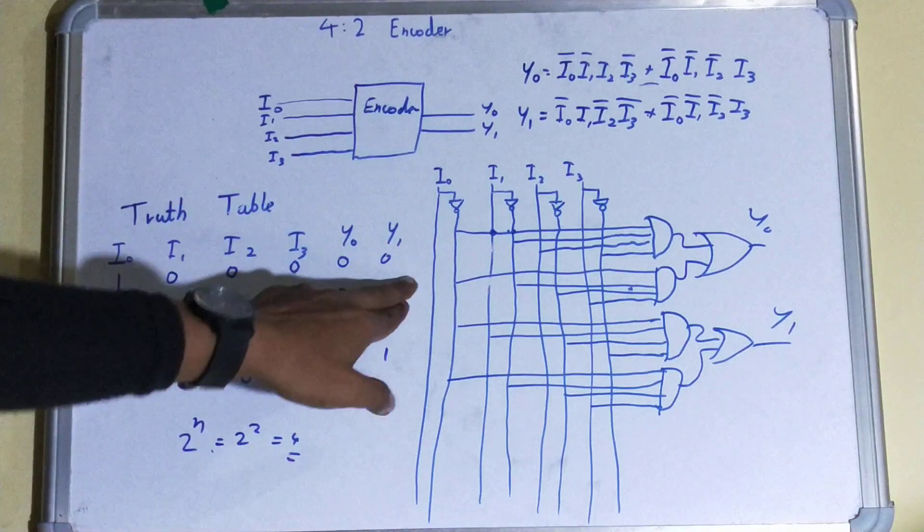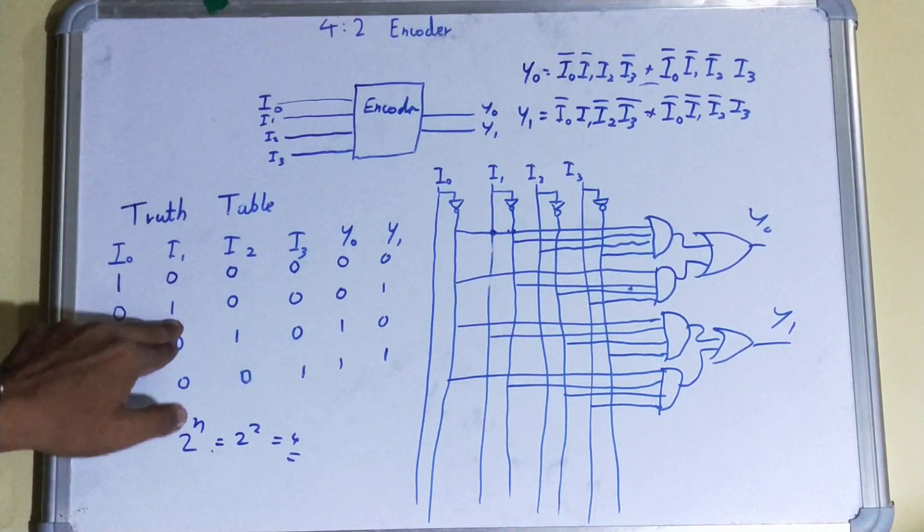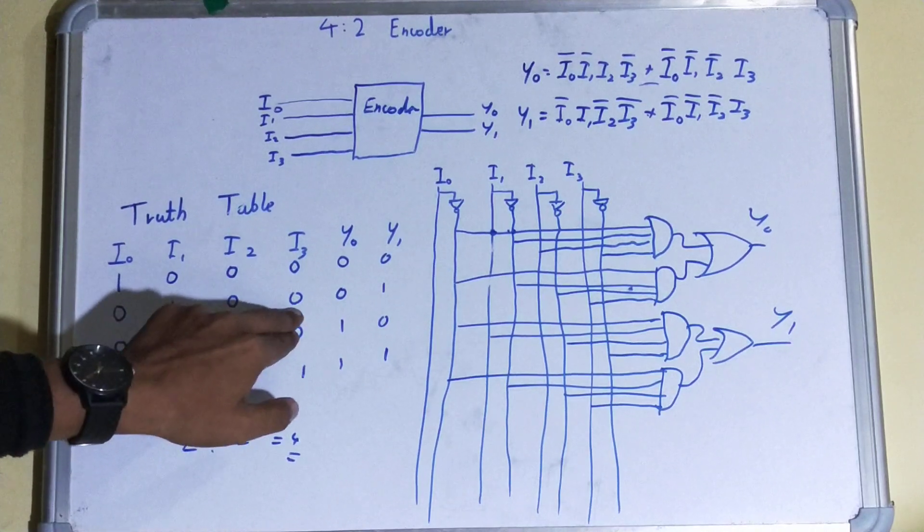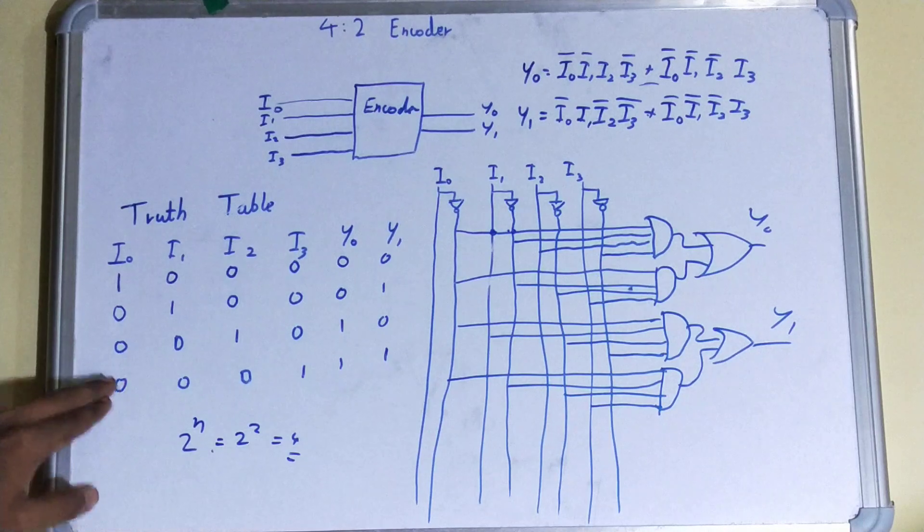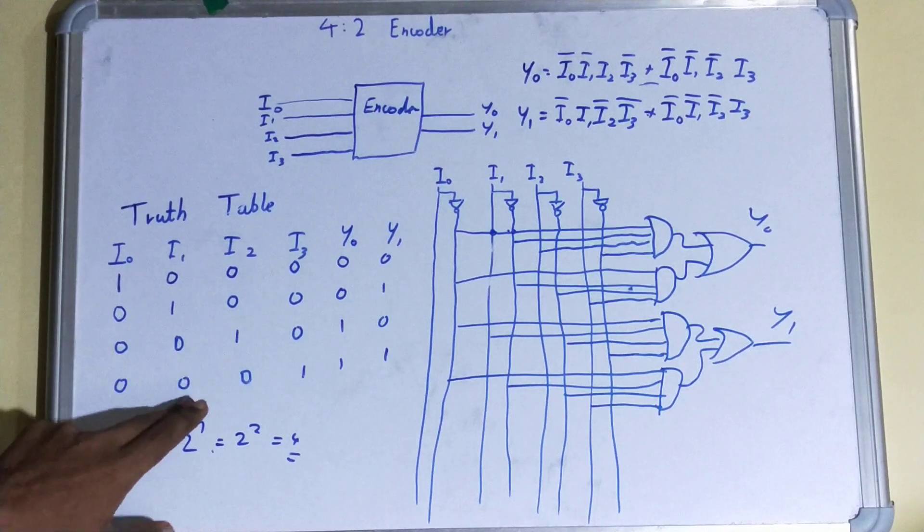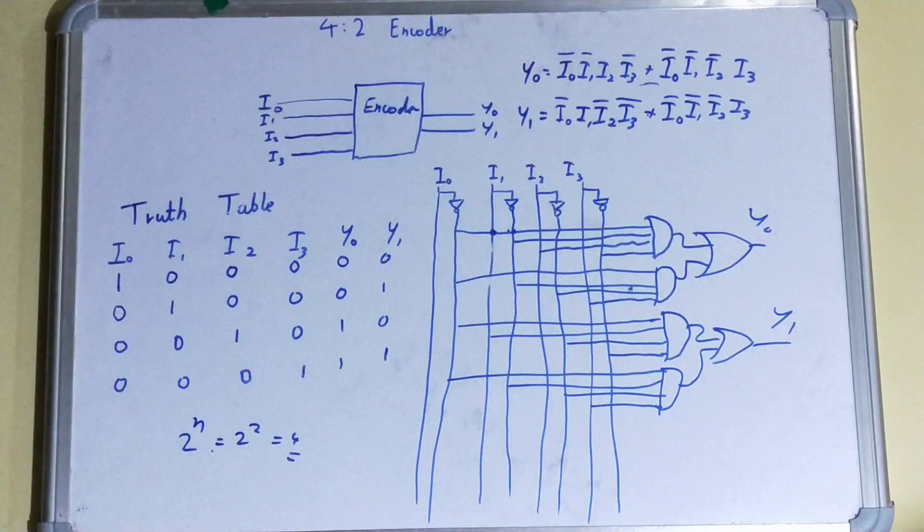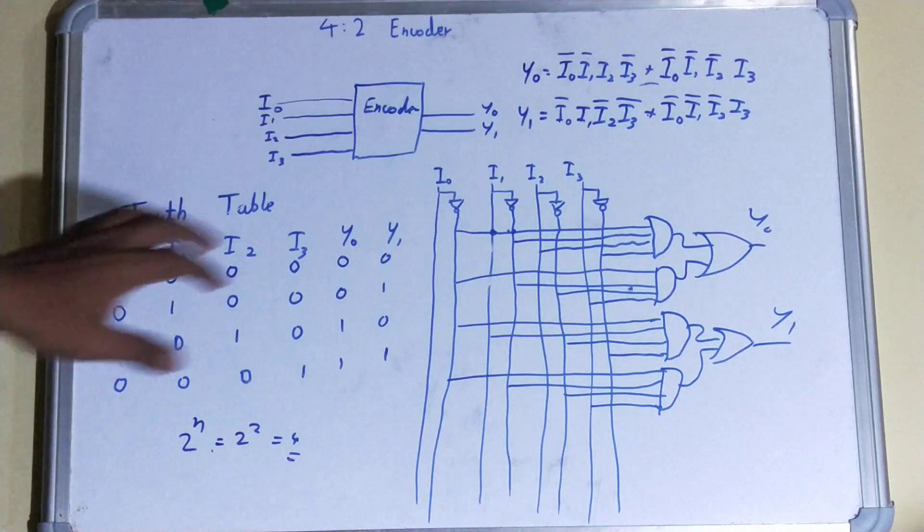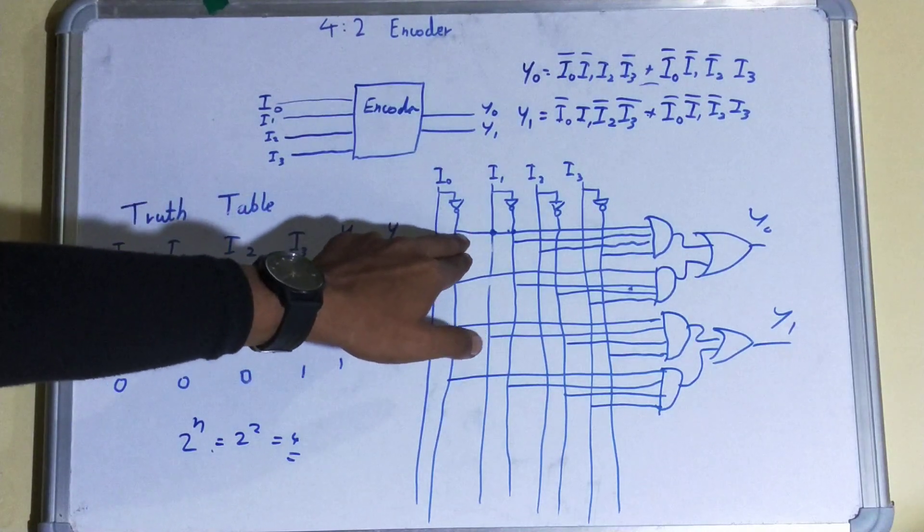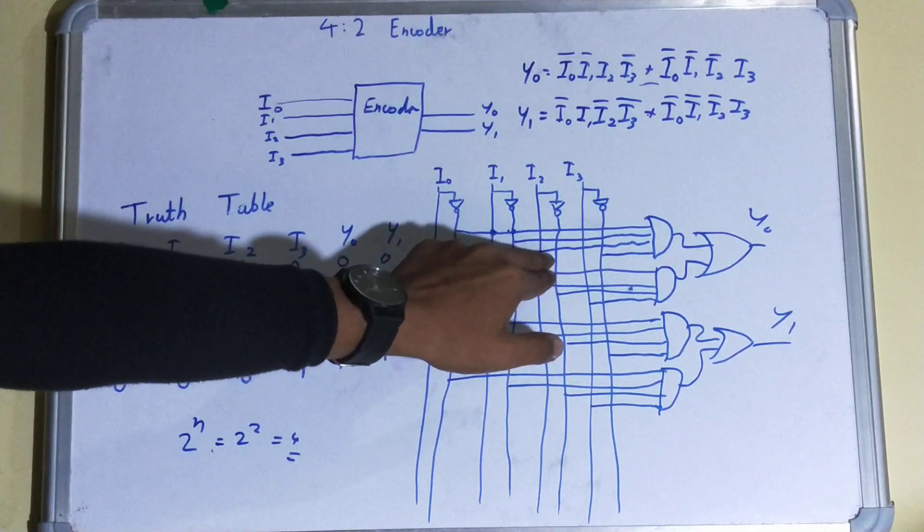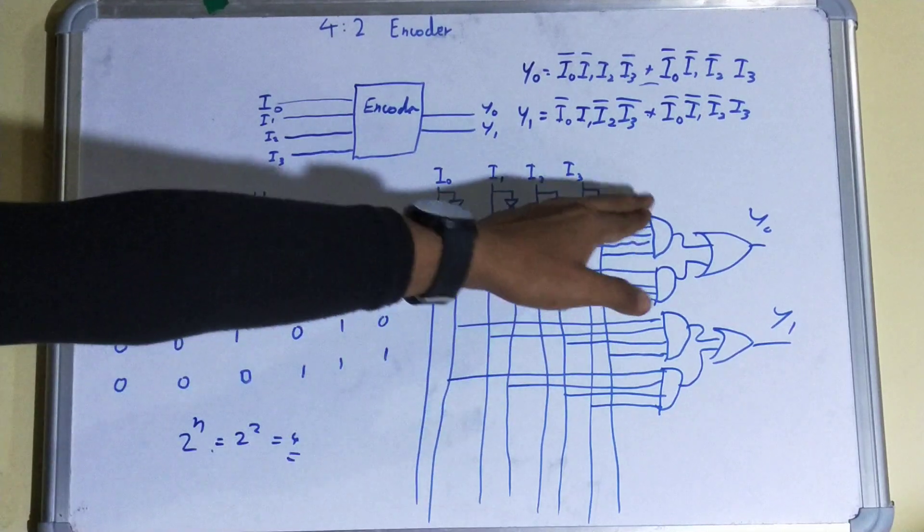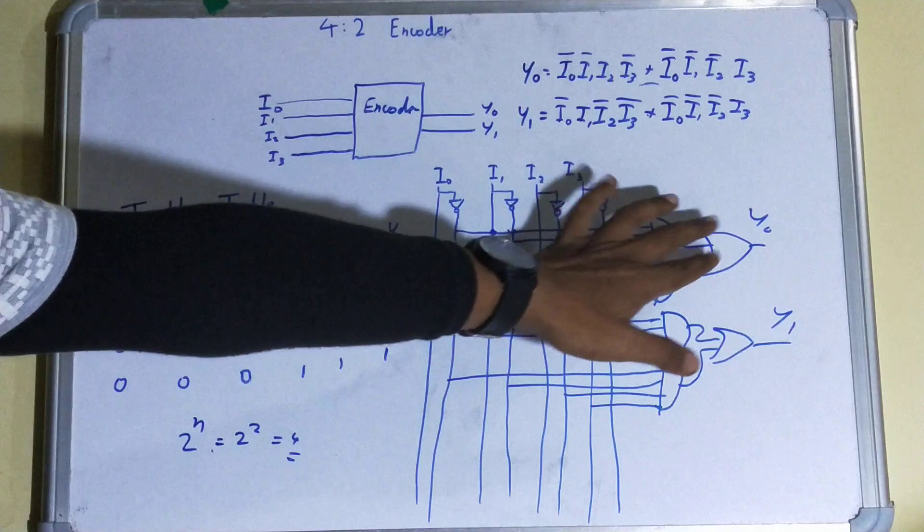Similarly, you can derive Y1 as well. For Y1, you can see I0̅·I1·I2̅·I3̅, plus I0̅·I1̅·I2̅·I3. I have added both. And then at last, I have made the logic gate diagram. You can see NOT I0, NOT I1, I2, NOT I3. This is how I have ANDed all those, and at last added them through an OR gate.